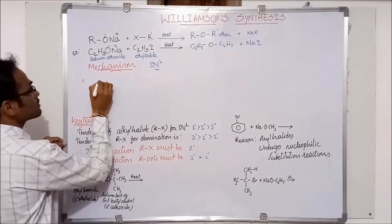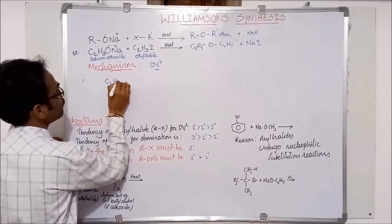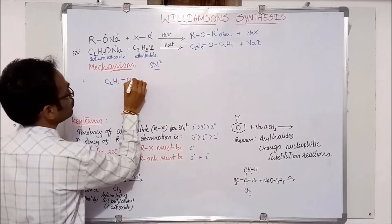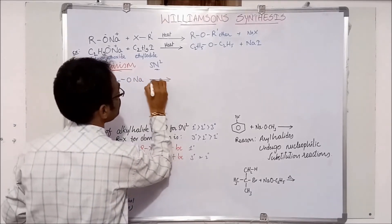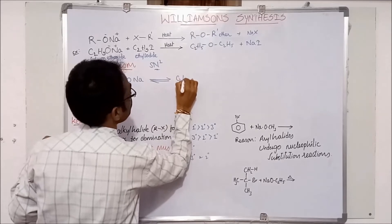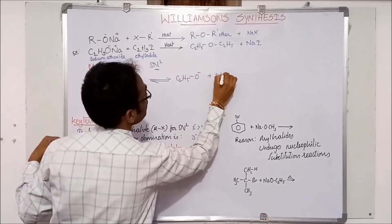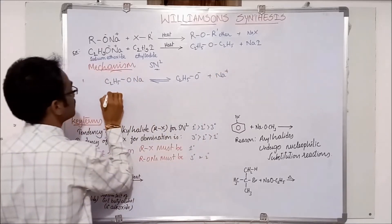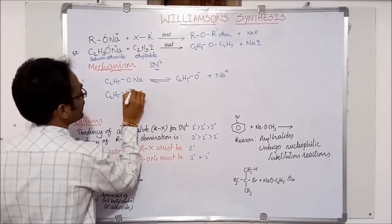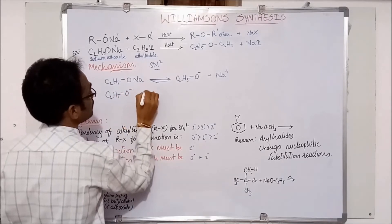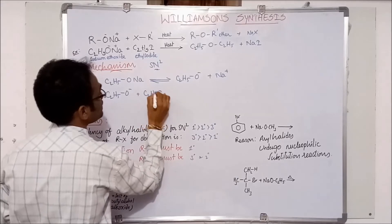Now, let us see the steps. C2H5ONa, that is sodium ethoxide, dissociates into C2H5O- plus Na+. C2H5O- plus C2H5I, that is ethyl iodide.